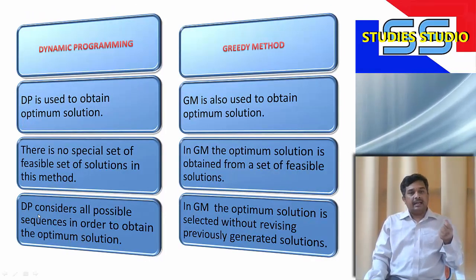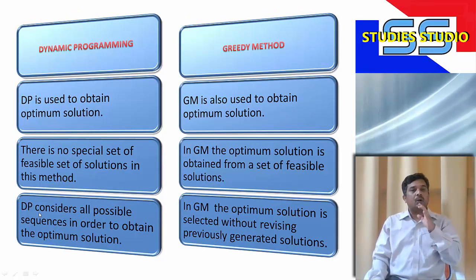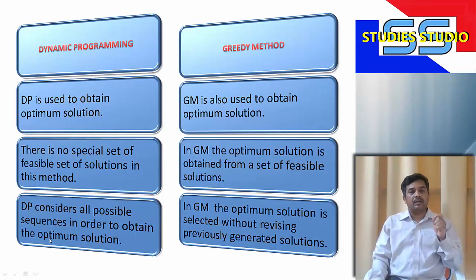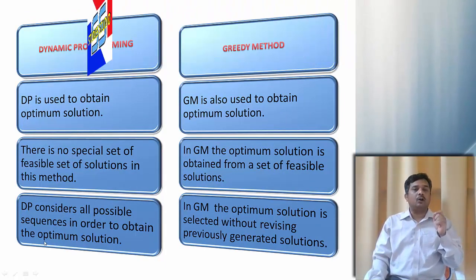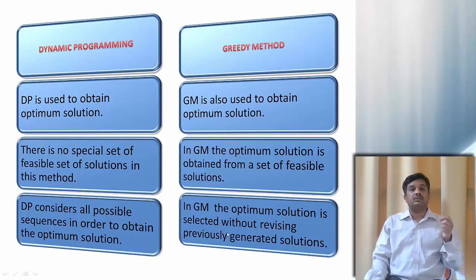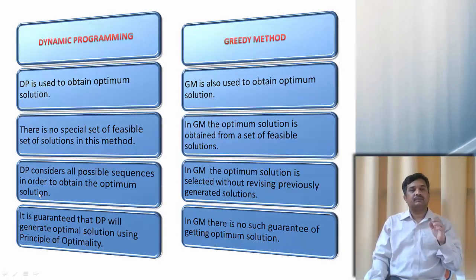In dynamic programming, we consider all the possible sequences in order to obtain the optimal solution. Whereas under greedy method, the optimal solution is selected without revising the previously generated solution.